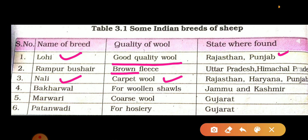Next is Bakharwal. The wool of Bakharwal is good for woolen shawls and is found in Jammu and Kashmir. Next is Marwari. Marwari has coarse wool and it is found in Gujarat. Then Patanwadi. The wool of Patanwadi is used for hosiery and it is found in Gujarat.